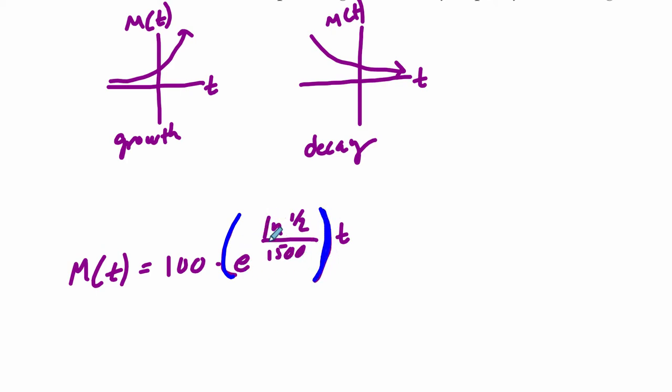If this value, this altogether, e to the ln of 1/2 over 1,590, whatever that is, if that's a positive value and it's over 1, you're going to have growth. And if it's between 0 and 1, then you're going to have decay. Now, the simpler version, just forget this question for a moment, if I wrote 100 times 2 to the t, that's growth.